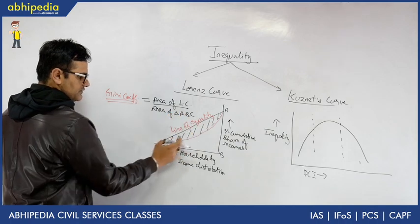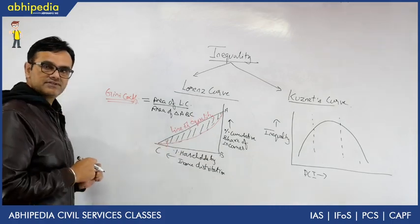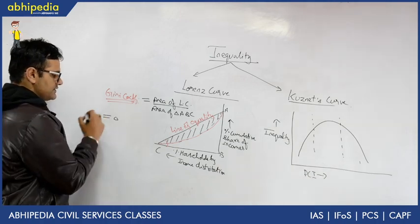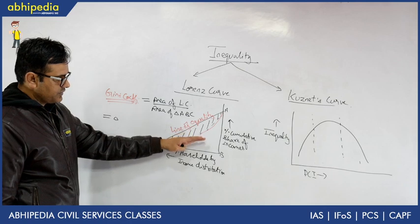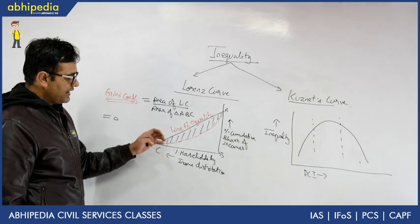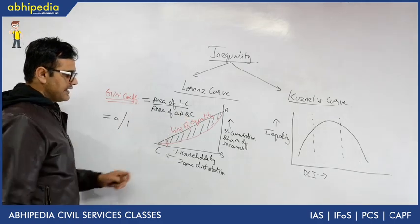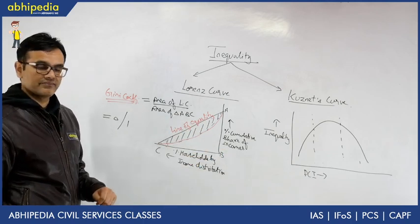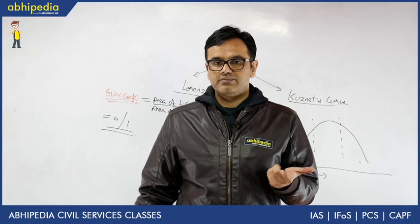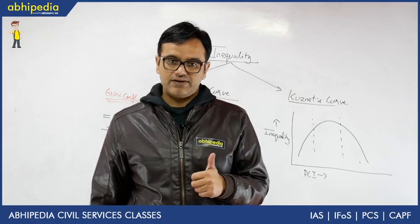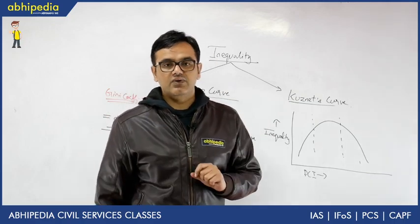So the shaded portion is the area of the Lorenz Curve and triangle ABC provides you the Gini coefficient. Anytime this Gini coefficient comes out to be 0, that means the curve is on the line itself — that is a situation of perfect equality in the society. And in case this comes out to be 1, that is the situation of perfect inequality. In UPSC this statement has already come: if Gini coefficient equals 1, what will be the situation? It is perfect inequality, and if it is 0 it is perfect equality.